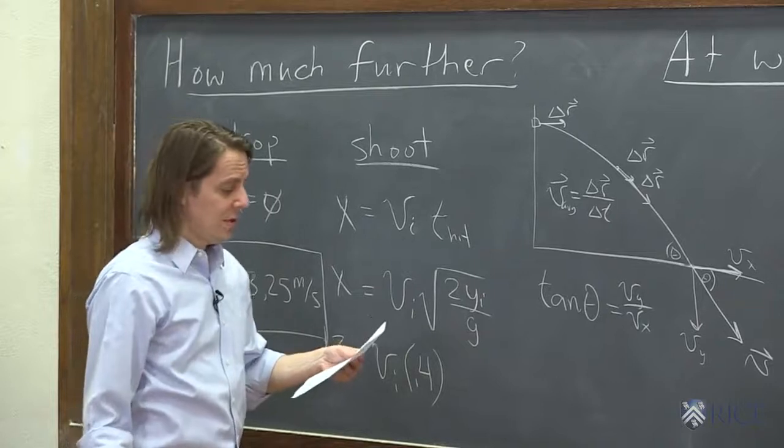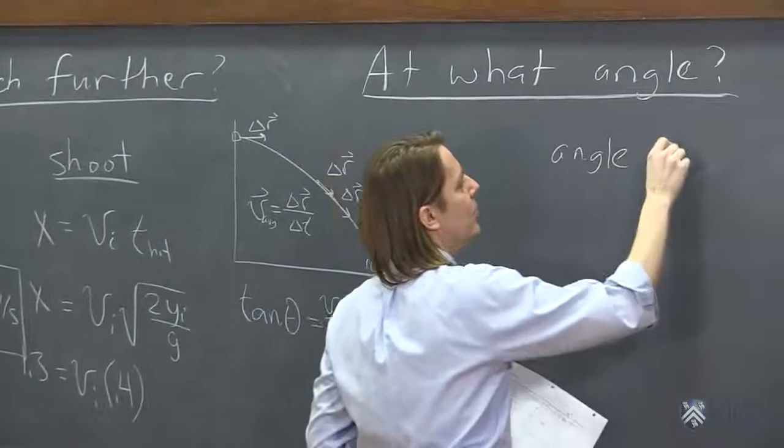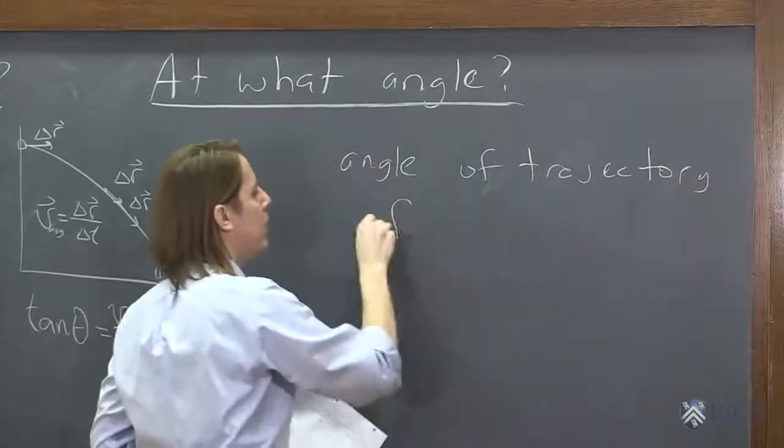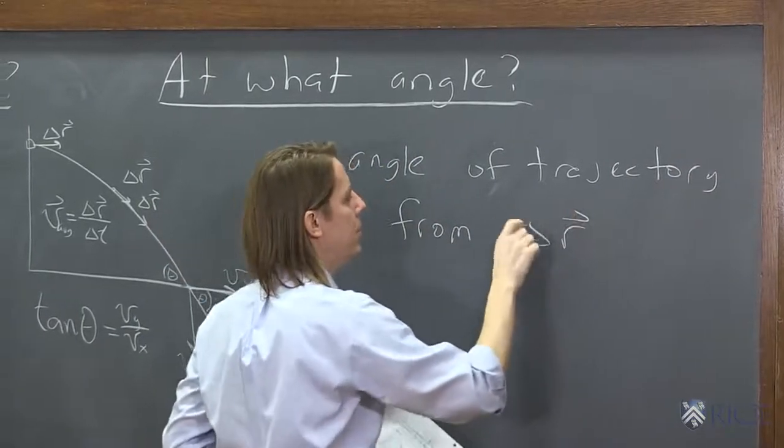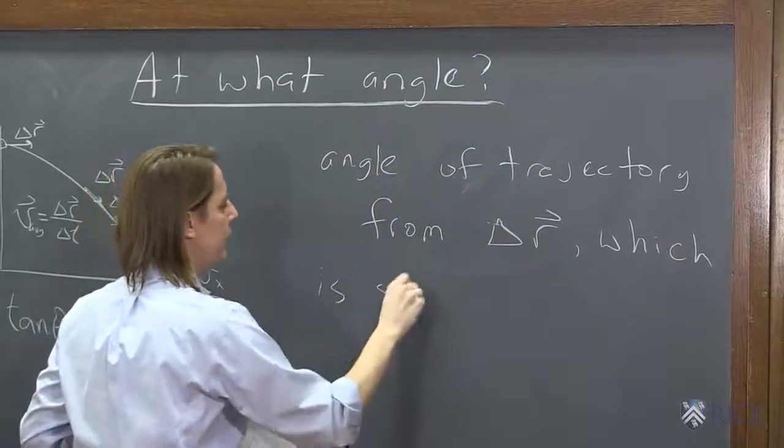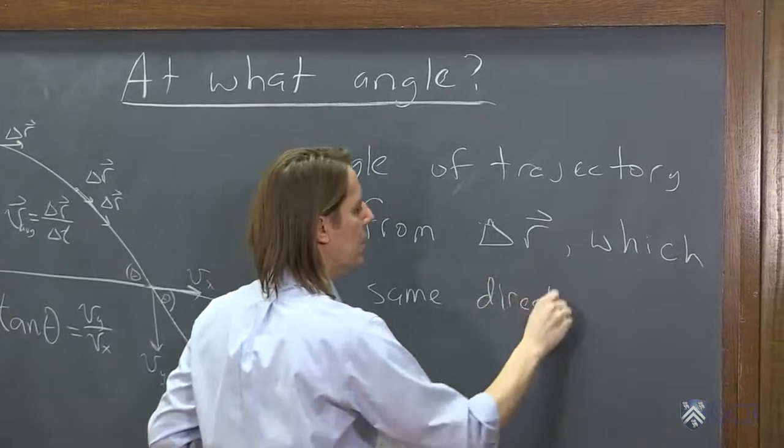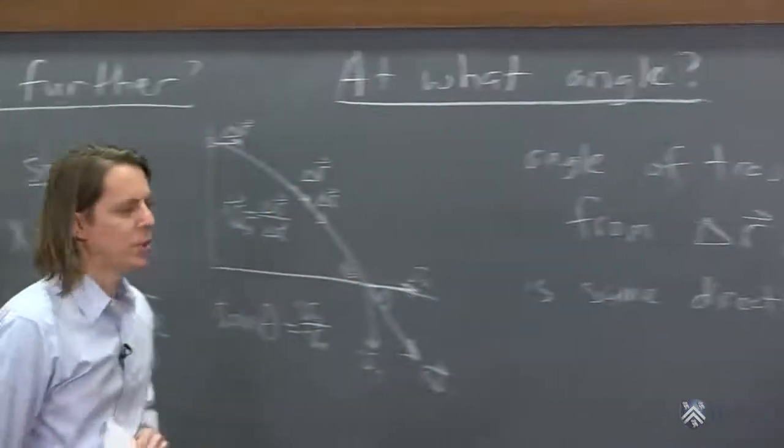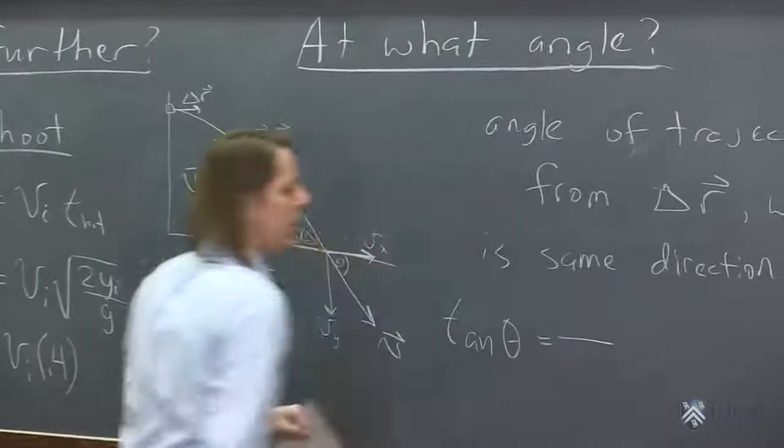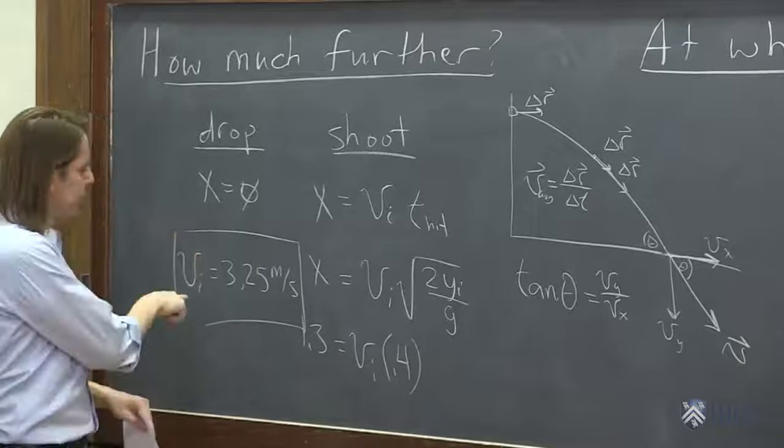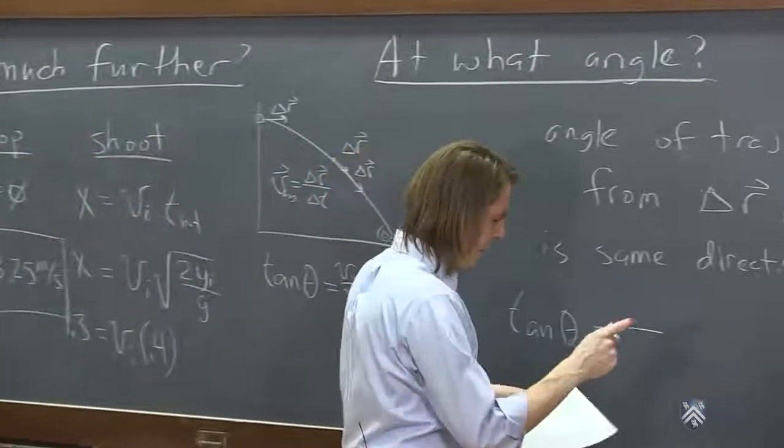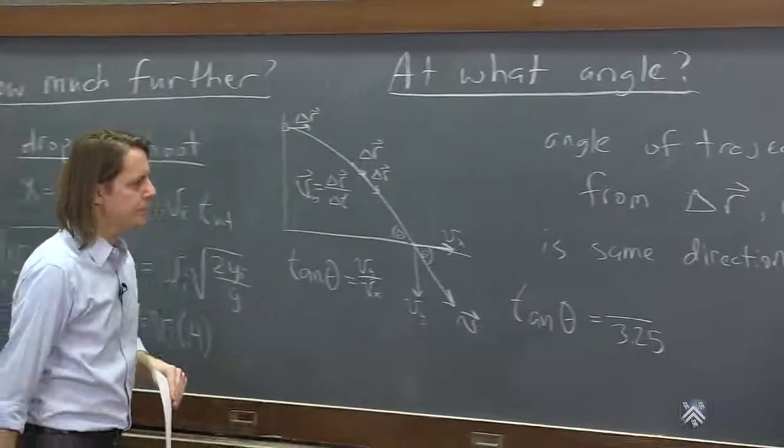So let's see, if we could actually get that angle. So the angle, just as a summary, is of the trajectory from delta r, which is the same direction as v. So we're getting it from v. So tangent theta, and what numbers do we have here? vy over vx. Vx, we just figured out. Because we had the initial horizontal velocity, and it doesn't change. There's no acceleration in the x. So we put 3.25 in the bottom.